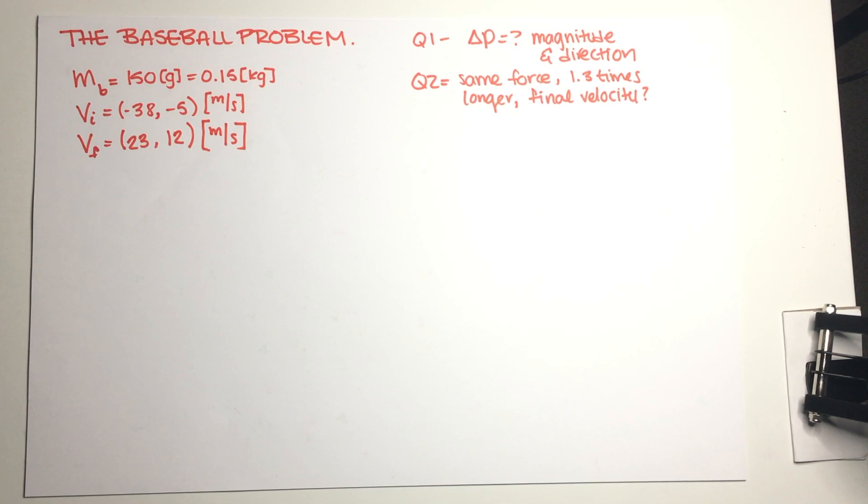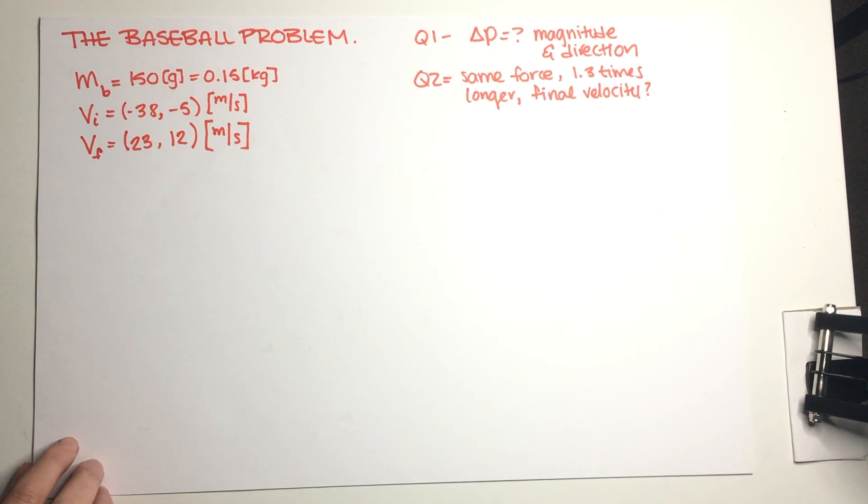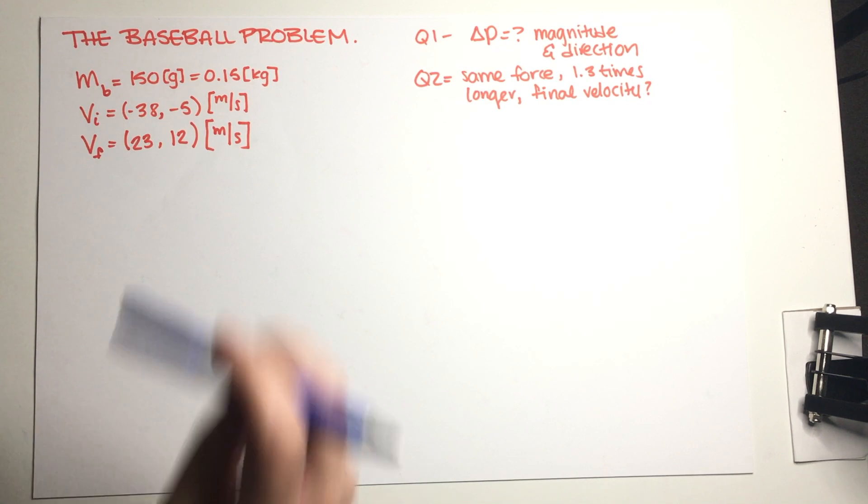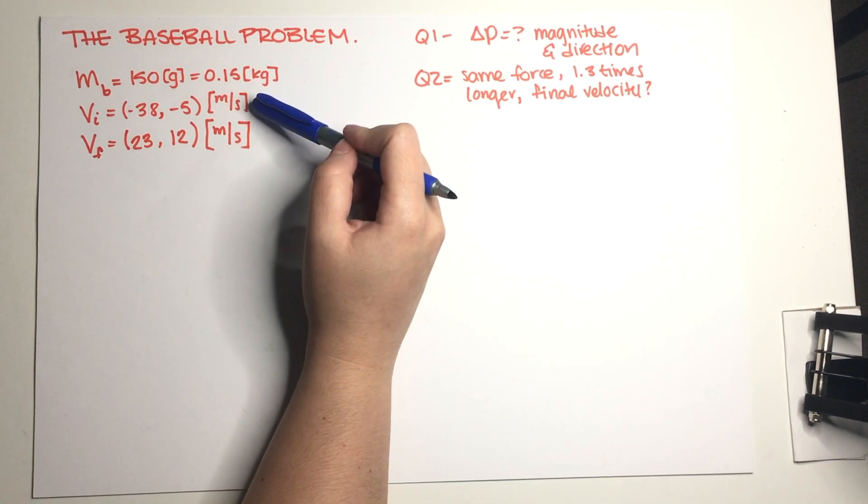As you can see I've copied all of the relevant information over here in my notes. So let's just go ahead and start this problem. Part 1 is essentially just asking what is the magnitude and direction of delta p, and this is actually going to be somewhat straightforward.